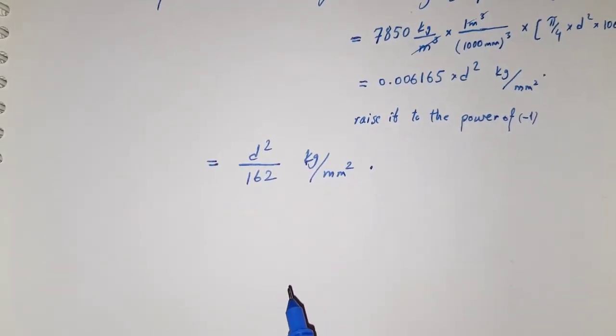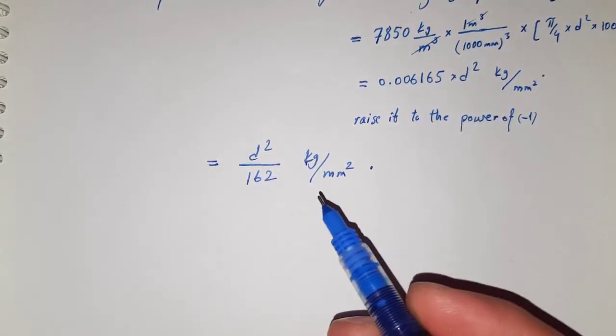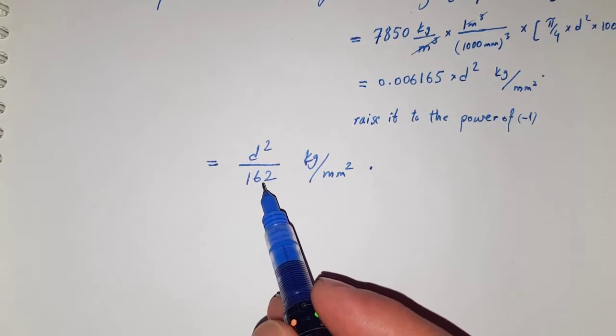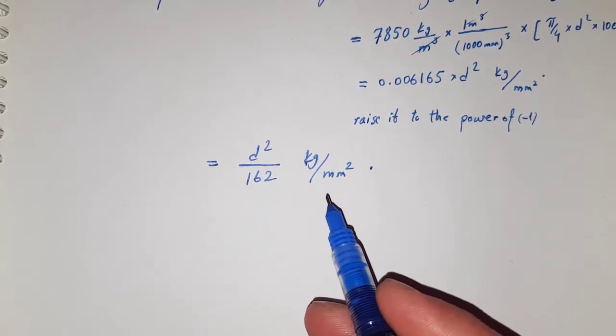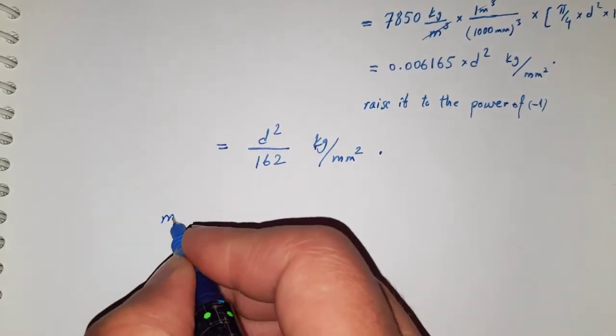If you want to find, for example, for 10 meters long bar, then we have to multiply the value of this by 10, or we can simply write that the mass of reinforcement bar...